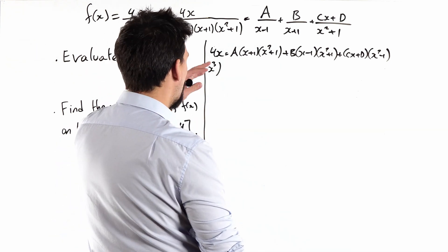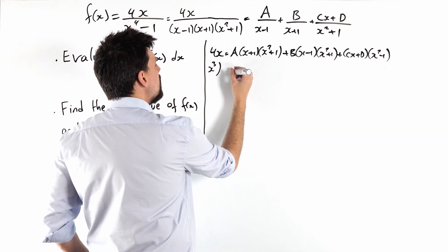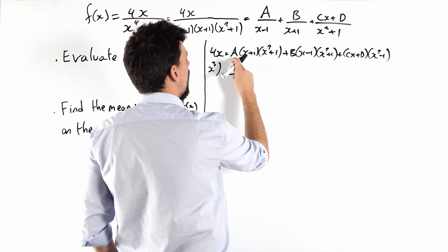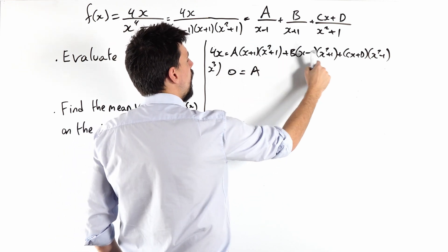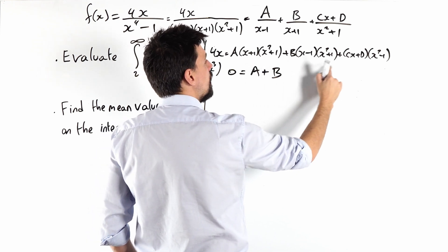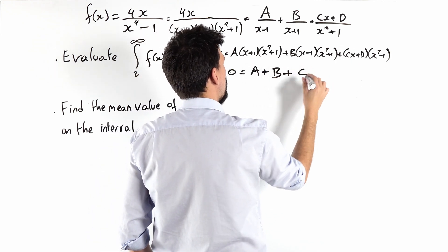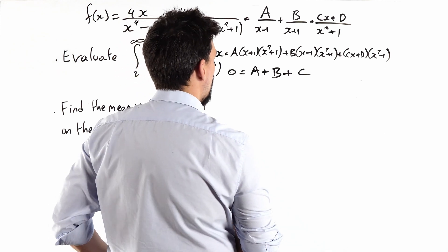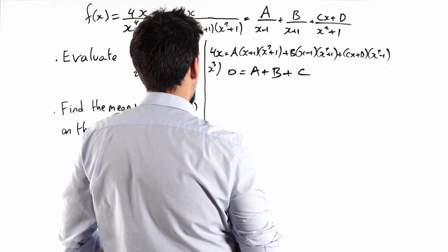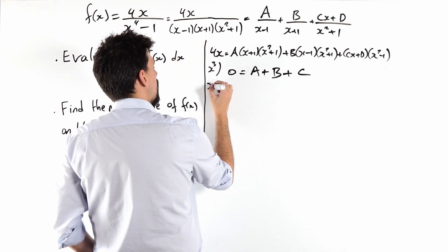So the highest one on the right is an x cubed, isn't it? Now I shouldn't get any x cubed. How many would I get? I would get ax cubed, I'd get a bx cubed, and I'd get a cx cubed. So a plus b plus c has to equal to nothing.